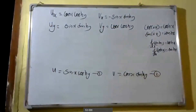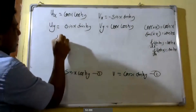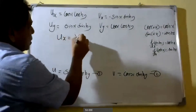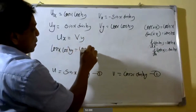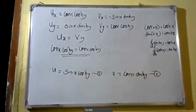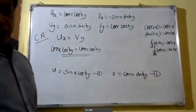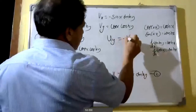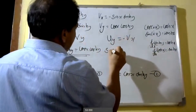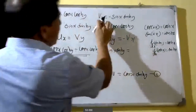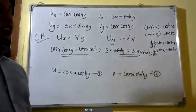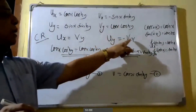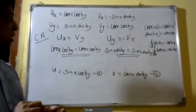Now we check the Cauchy-Riemann equations. The first equation says u_x = v_y. Here u_x = cos(x)·cosh(y) and v_y = cos(x)·cosh(y), so the first Cauchy-Riemann equation is proved. The second equation is u_y = -v_x. Here u_y = sin(x)·sinh(y) and -v_x = -(-sin(x)·sinh(y)) = sin(x)·sinh(y). Therefore both Cauchy-Riemann equations are proved, and the given function is analytic.